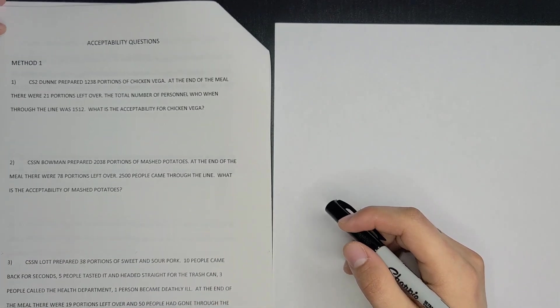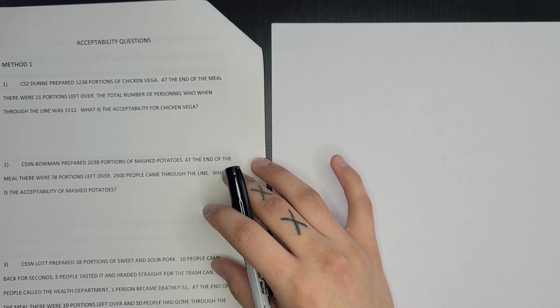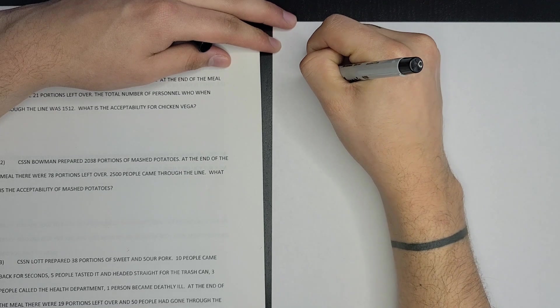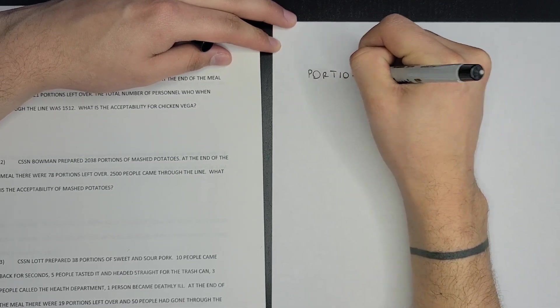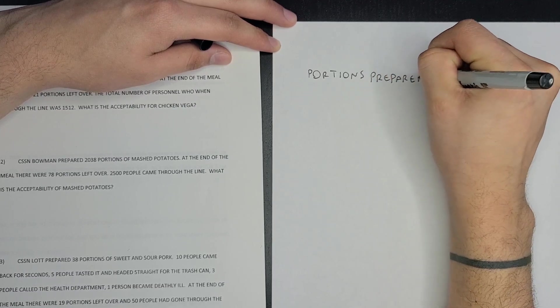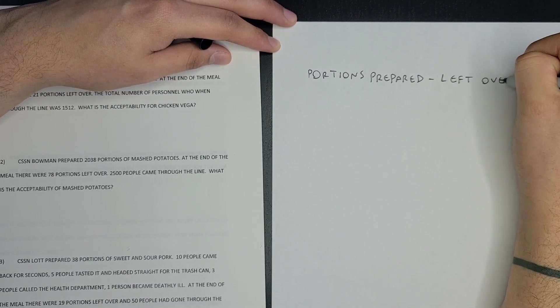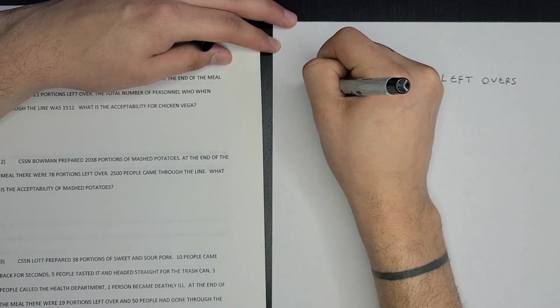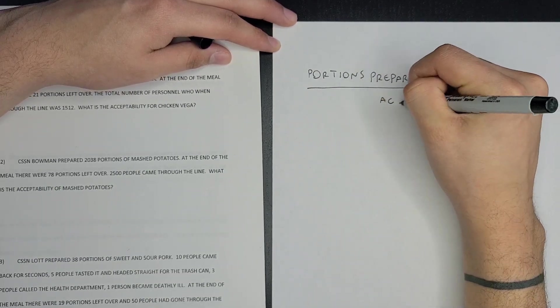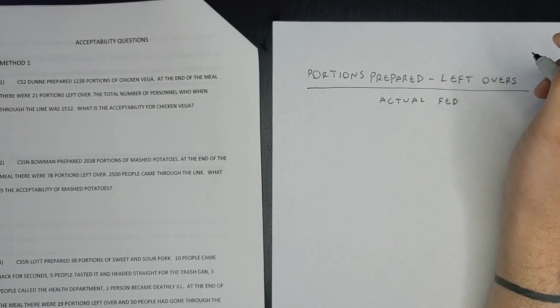Hey everyone, we're going to continue with our first method with another problem. I'll write my formula down, which is portions prepared minus your leftovers, divided by your headcount or actual fed. This first method is used